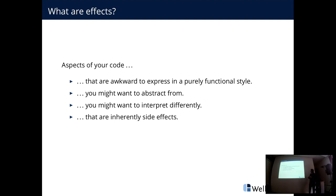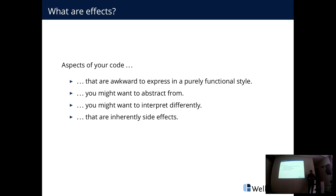Effects can be things that are just awkward to express in a purely functional style — things like state. You can encode state by having an input and output value, but keeping track of that is noisy and annoying, so you want to abstract from it. Effects are also things you might want to interpret differently depending on the situation — for example, between a production and a testing environment — so that you can test large parts of the application in a different setting.